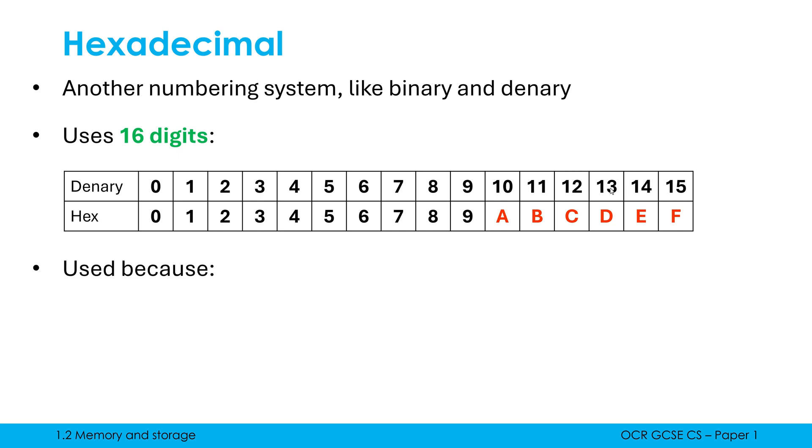Why do computer scientists use hexadecimal? Well we use it because it converts really easily with binary, but also when we write out long binary it's very long and very confusing and blurs together and it's hard to memorize. Hexadecimal is a lot more concise than binary and because it has more than two digits it's easier to memorize.